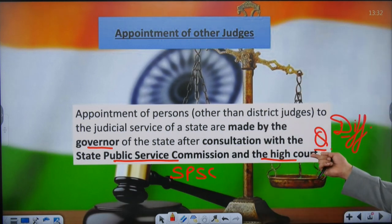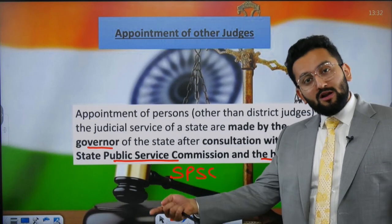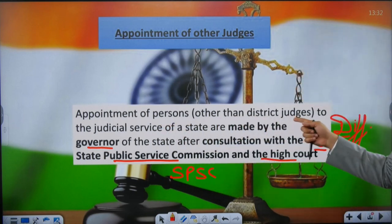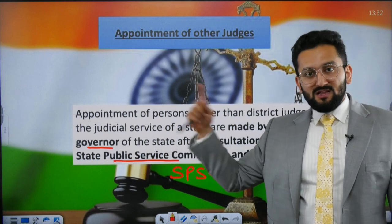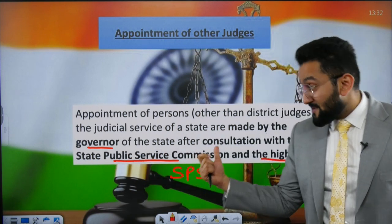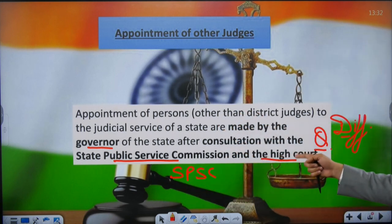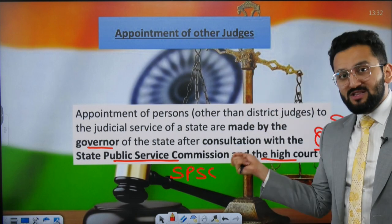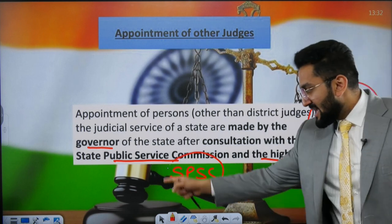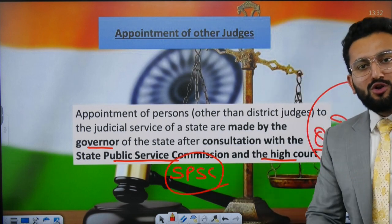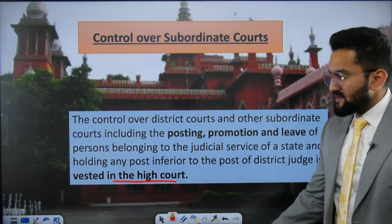There's a difference when it comes to appointment of other judges. Judges in the subordinate judiciary — at the level of district court or below — when we say persons other than district judges to judicial service of a state, they are appointed by the Governor. But the process is different — after consultation with both the SPSC (State Public Service Commission) and the High Court. This is where SPSC comes in, unlike in the case of district judges.